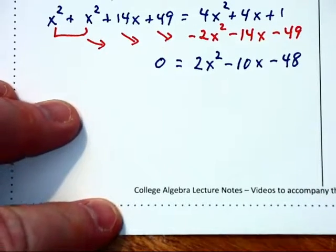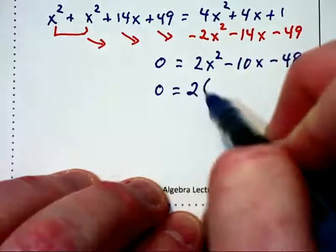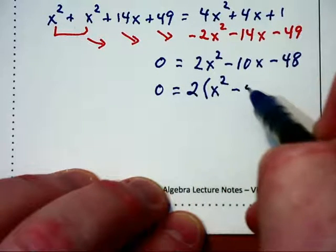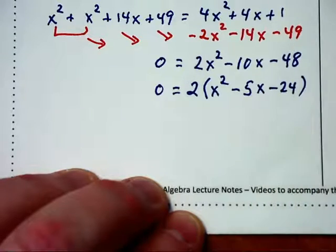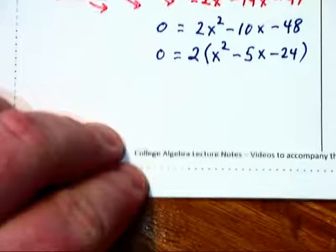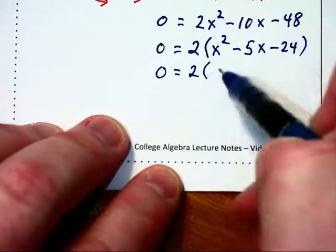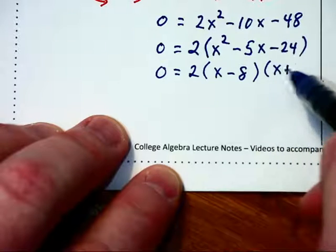Again, we find all these values are even, so we can factor out a greatest common factor of 2, leaving x squared minus 5x minus 24. We will factor further: 0 equals 2 times (x minus 8) times (x plus 3).